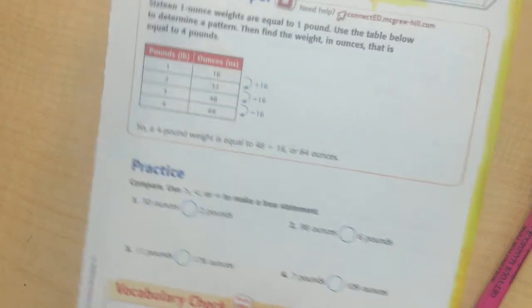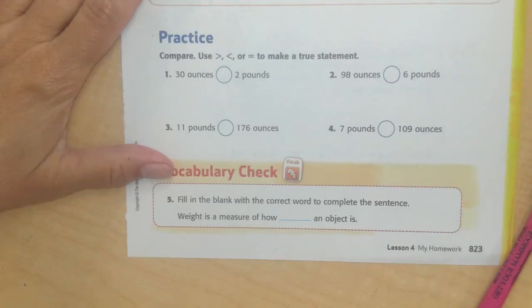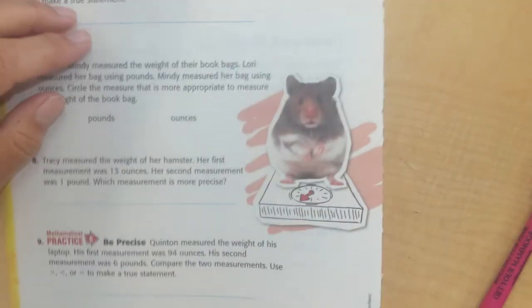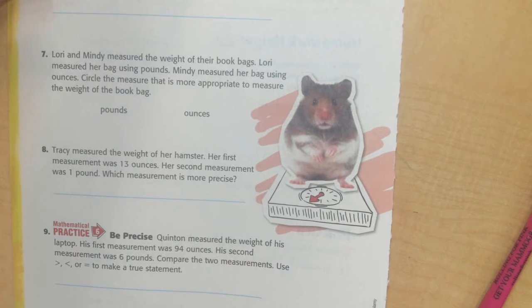Alright guys, I have homework for you. Page 823 and 824. There's a little mouse on it on the scale, right? We're weighing things.